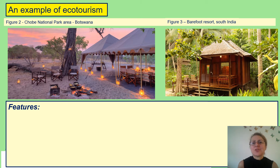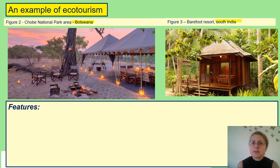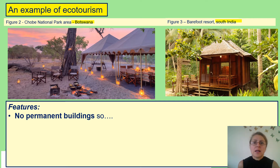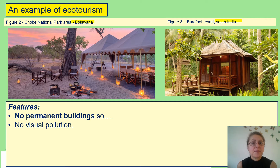So what exactly is eco-tourism? On the screen you have two figures of eco-tourist resorts — one in Botswana and one in South India. You will notice that they share similar features. For example, eco-tourism resorts don't have permanent buildings. This means that there will not be the same level of visual pollution that we saw in the previous lessons of Benidorm, where there are huge hotels which dominated the landscape.